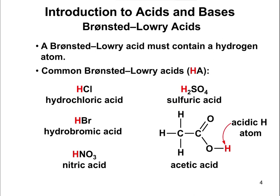In order for something to be a proton donor or an acid, it has to have a hydrogen atom. Common acids include HCl, HBr, HNO3 (nitric acid), H2SO4 (sulfuric acid — both hydrogens can be donated), and acetic acid, which we'll discuss in Chapter 13. In acetic acid, the acidic proton is the one attached to the oxygen. Hydrogens attached to carbon are not donated; only the hydrogen attached to the O is the one that's donated.